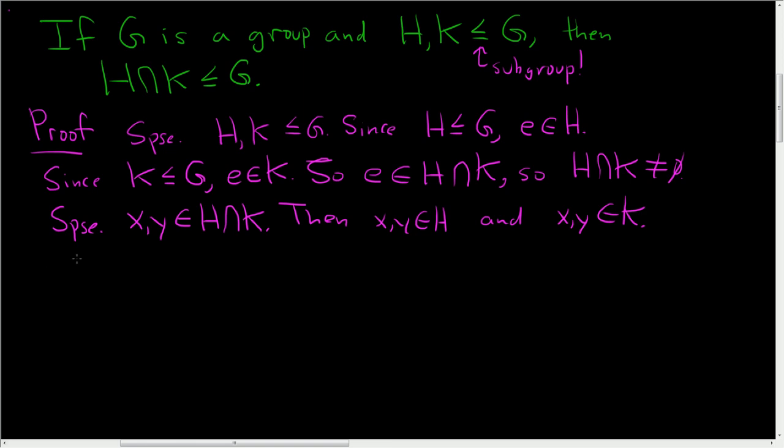Since H is closed under the group operation, then XY is in H. And since K is closed under the group operation, then XY is in K. So XY is in H, XY is in K, so by definition of intersection, it lives in the intersection.